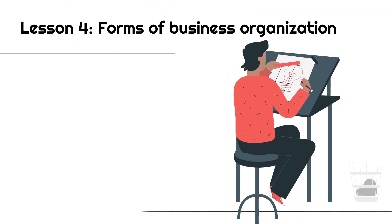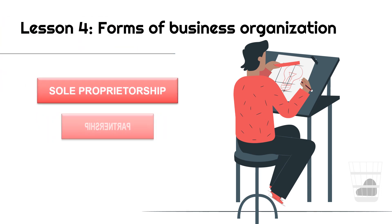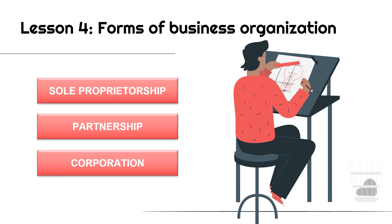For our Lesson 4, we're going to discuss the forms of business organization, which are sole proprietorship, partnership, and corporation. We're going to discuss what is the difference between them, and what are the advantages and disadvantages of forming each type of business organization.